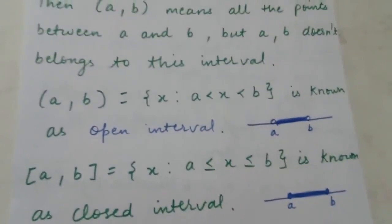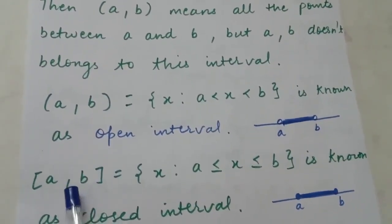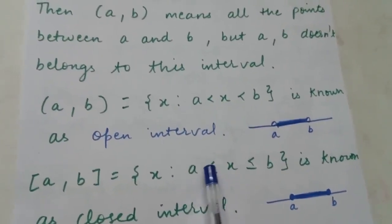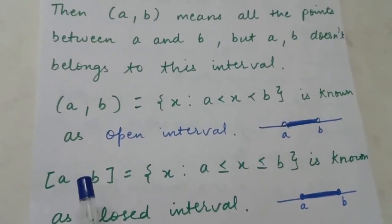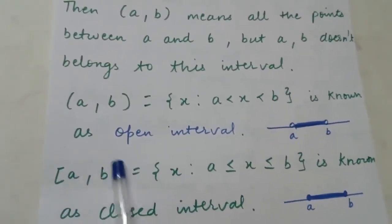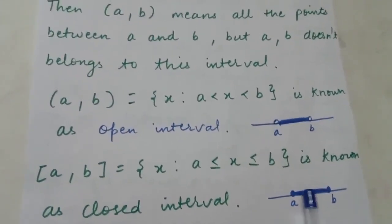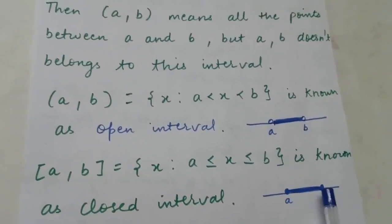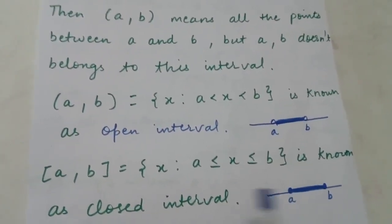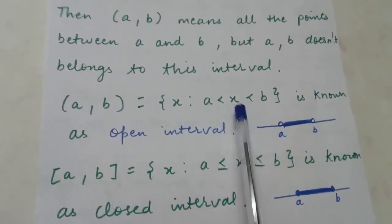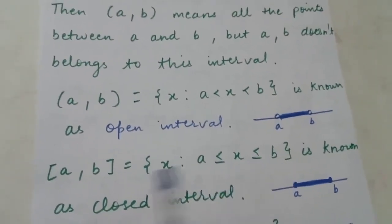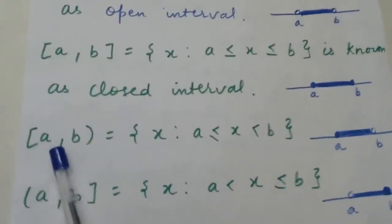Next is the closed interval [a, b] with square brackets. In set-builder form: {x : a ≤ x ≤ b}. This interval includes all elements between a and b and also includes a and b themselves. On the number line, we fill the circles at a and b because both are included. That is why we introduce the equality sign here.